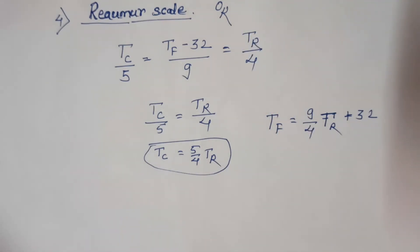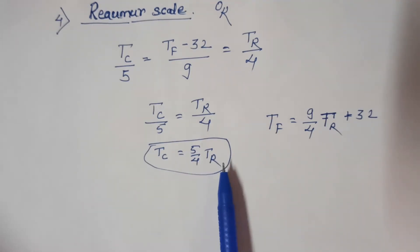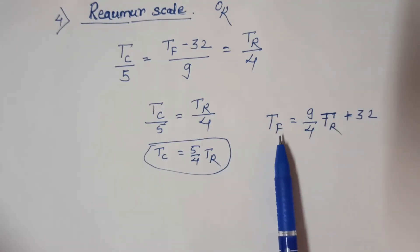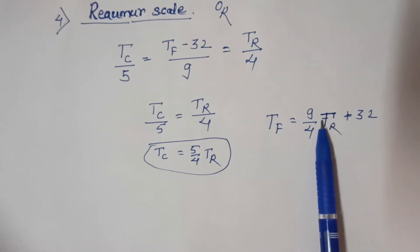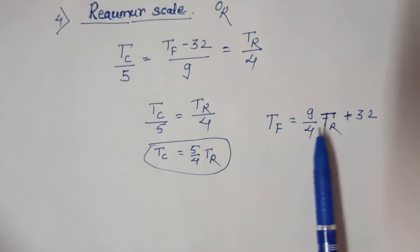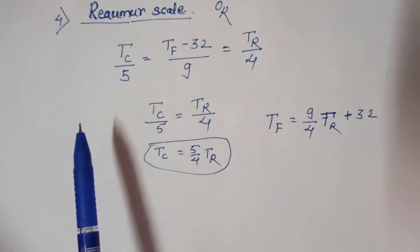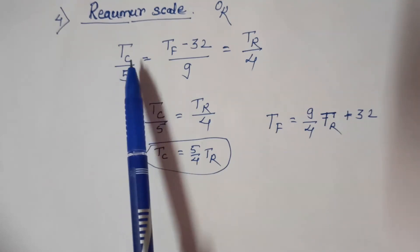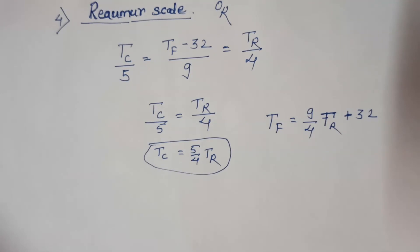On simplification, we get temperature in degree Celsius is equal to 5 upon 4 times temperature in degree Réaumur. One more relation: temperature in degree Fahrenheit is equal to (9/4) × Tr plus 32. These are the conversions from Celsius to Réaumur and Fahrenheit to Réaumur temperature scale.